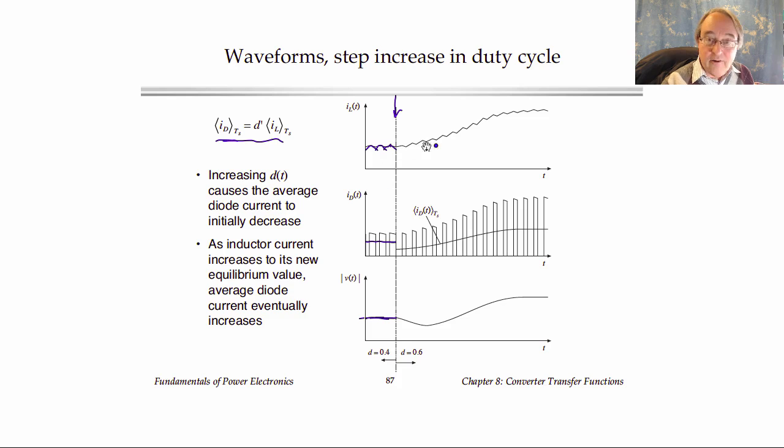It takes time for the inductor current to change, and right after we change to D equals 0.6, the inductor current hasn't had time to change much. It's a continuous waveform. So the inductor current goes through some transient, and eventually it builds up to a large value, but initially it hasn't had time to do that.